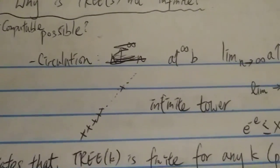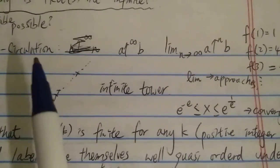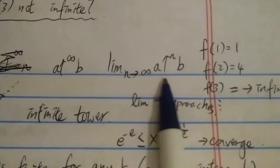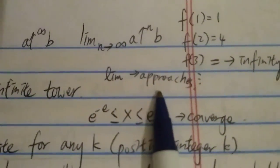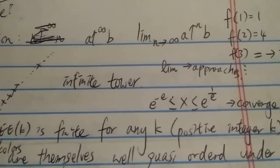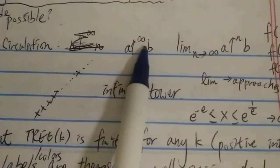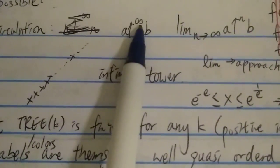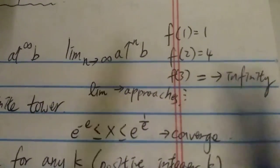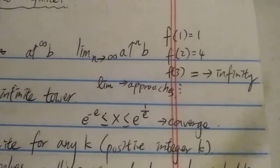Some commenters brought up up-arrow notation, which I covered in a previous video. This is defined as a with an infinite number of arrows to B, however it's defined using limits — meaning you are approaching something but not exactly reaching it. So you cannot just say 'a with infinite up-arrows to B'; it's undefined with an infinite number of up-arrows because you can never actually reach that. So f(1)=1, f(2)=4, f(3)=infinity, f(4)=infinity — using the limit.